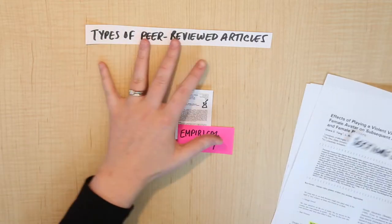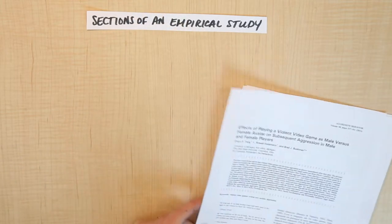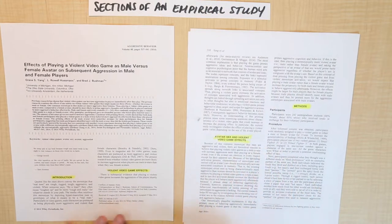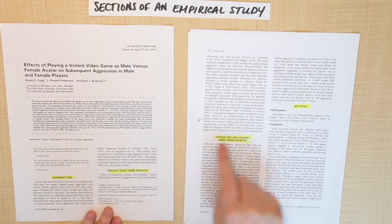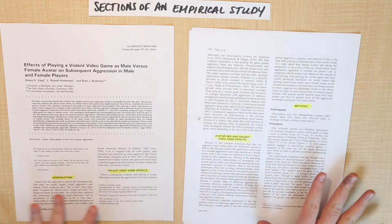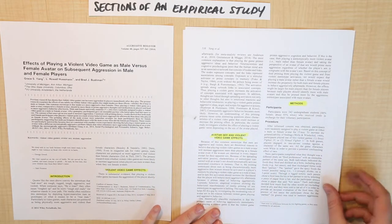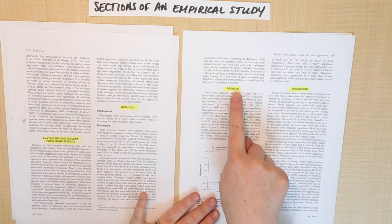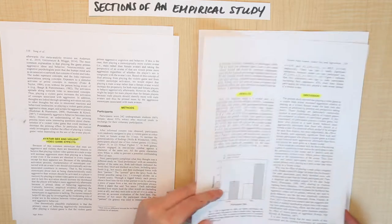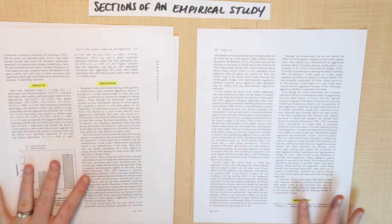The next thing that we did was look at the different sections of an empirical study — the kinds of sections that you might see when you come across these papers online. For example, you're going to always see an introduction, some sections at the beginning that are kind of like a literature review, state of practice in the field, and existing knowledge on the topic. You're going to see a methods section, then the results of the study, some discussion, possibly also a conclusion, and a paper will always end with the references section. So we talked about the sections of the empirical study.